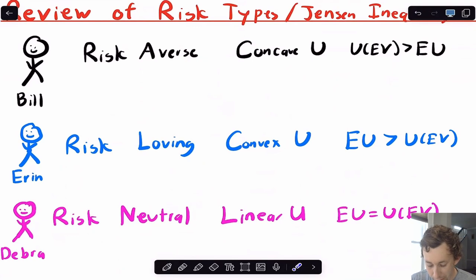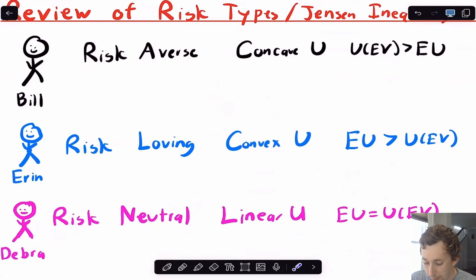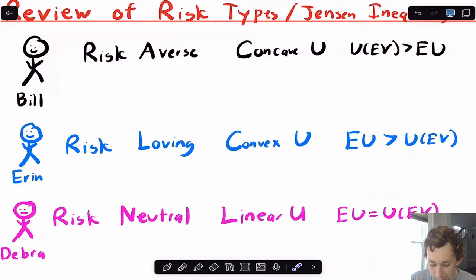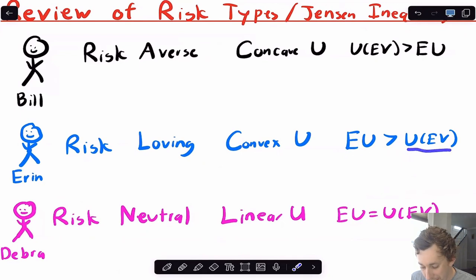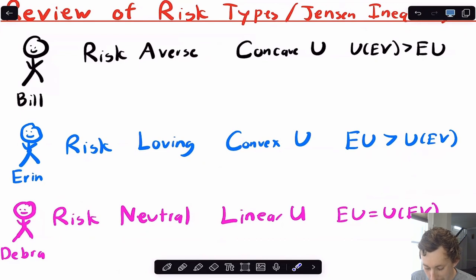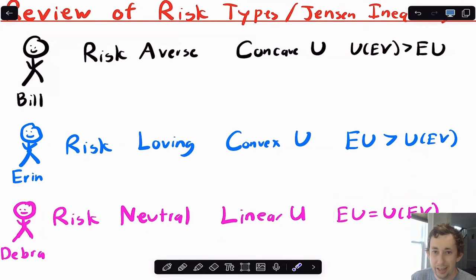For Bill, because he's risk averse, his utility is concave. So based on Jensen's inequality, if we're thinking about lotteries or a gamble, for Bill the utility of the expected value is always going to be greater than the expected utility of the gamble. For Aaron, who's risk loving, she's going to have a convex utility function, which means that her expected utility is going to be greater than the utility of the expected value. And for Deborah, who's risk neutral, she's got a linear utility function, and her expected utility is going to be exactly equal to the utility of the expected value.